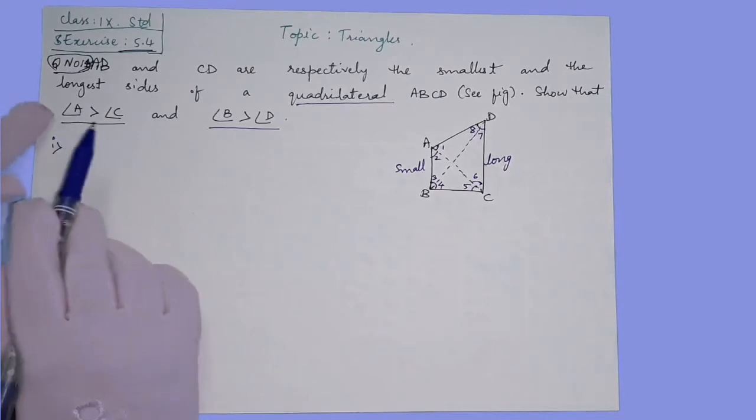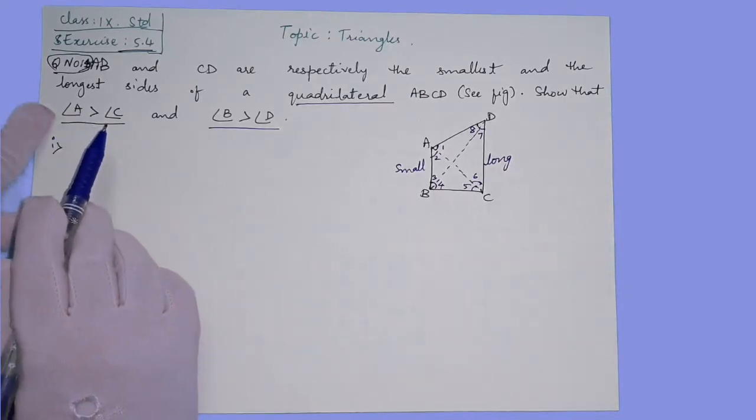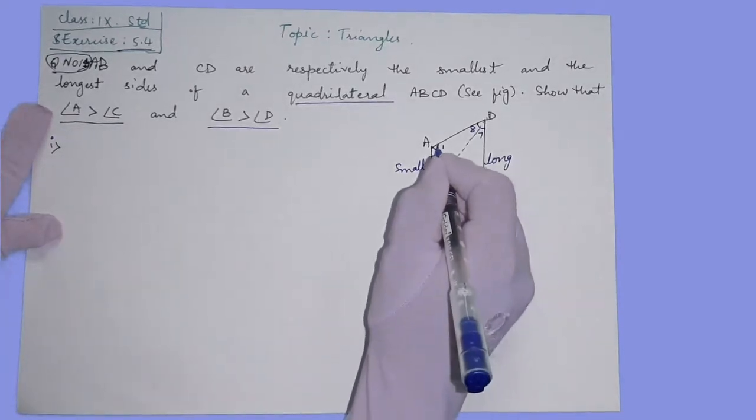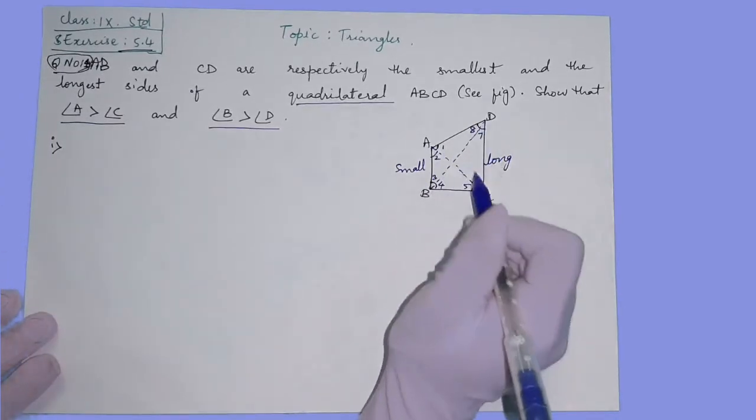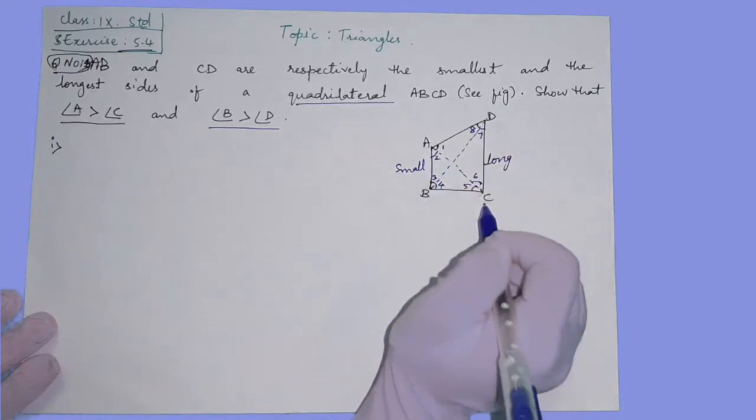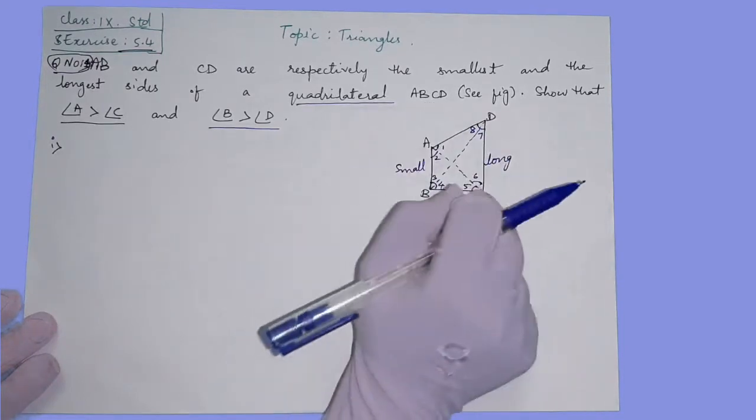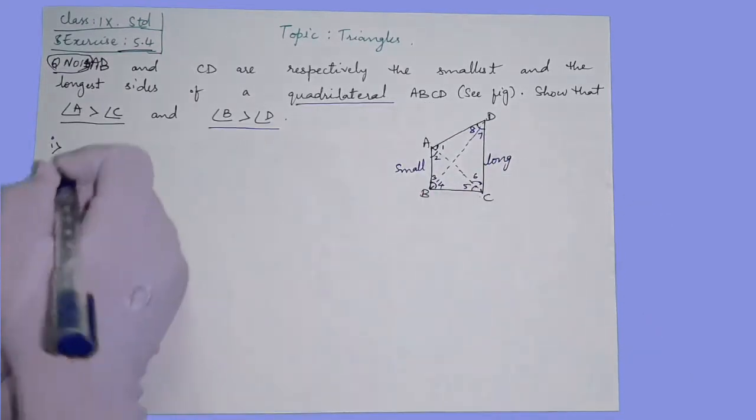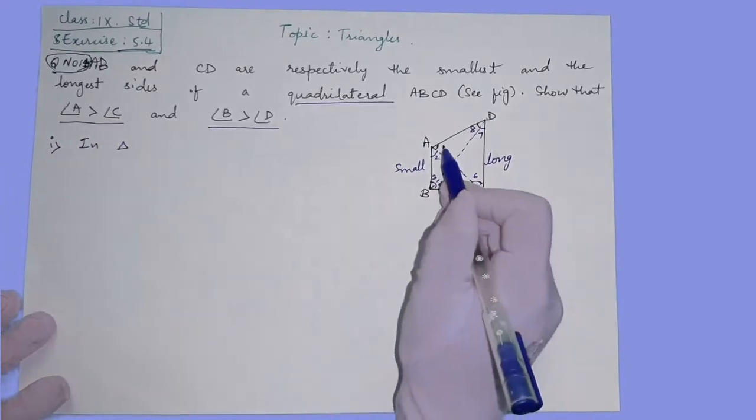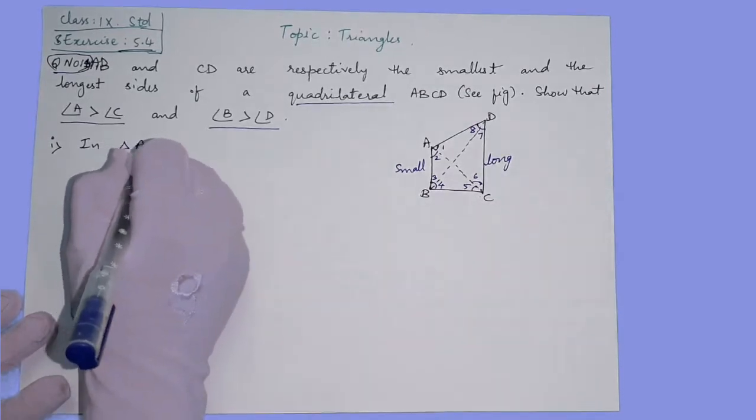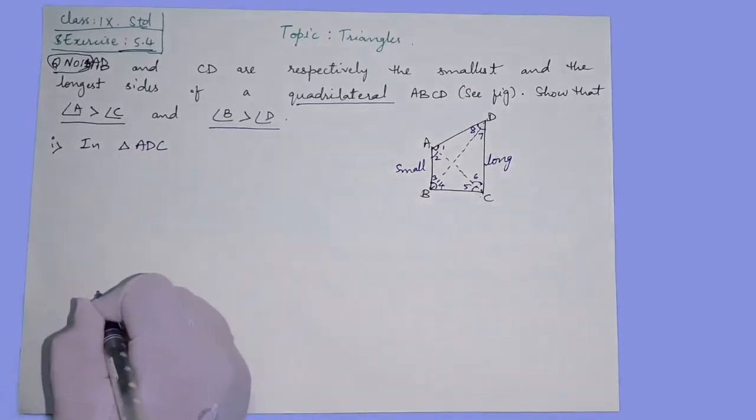Now we have to prove angle A and C. Which two triangles are we making? We can add ADC, ABC, or ANC. We will take first the upside triangle ADC. In triangle ADC, you don't see the diagonal, the two sides are missing: AD and DC.